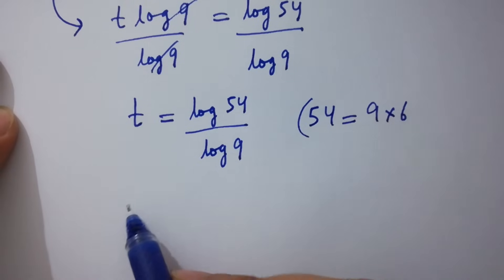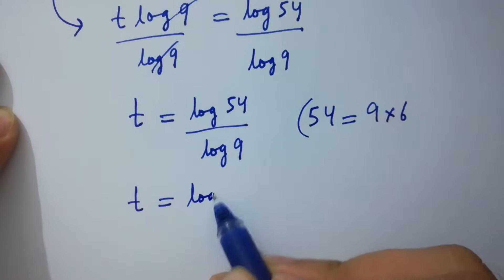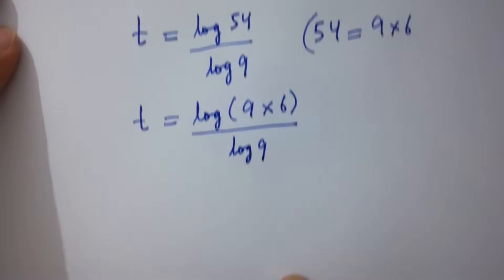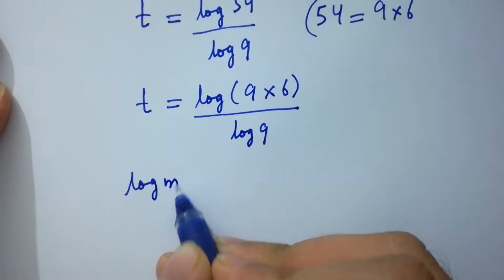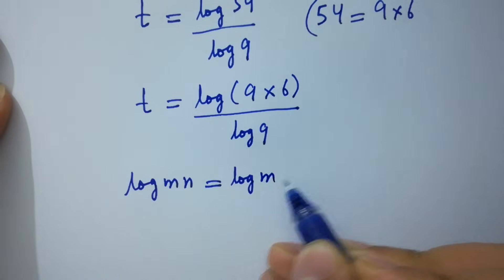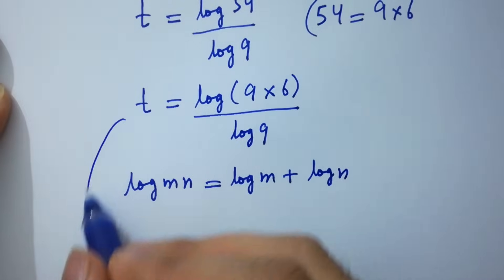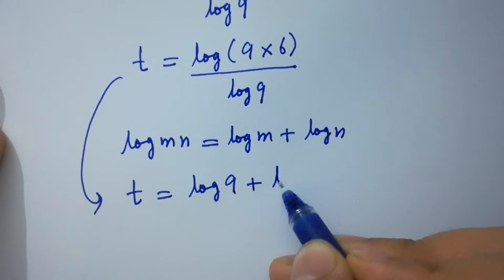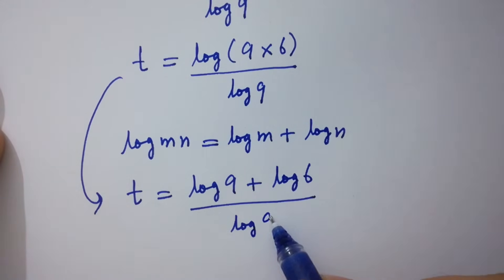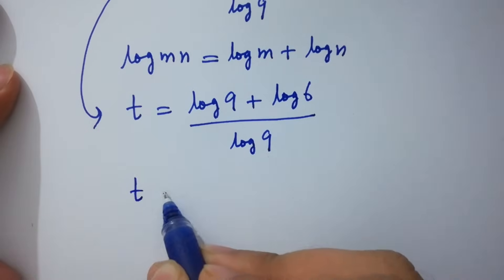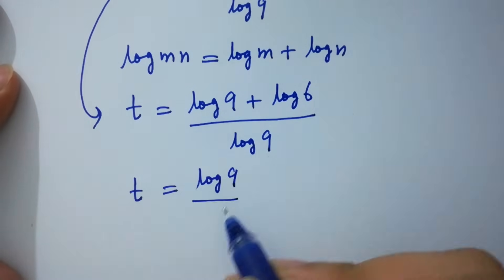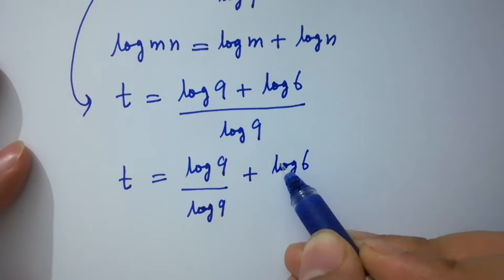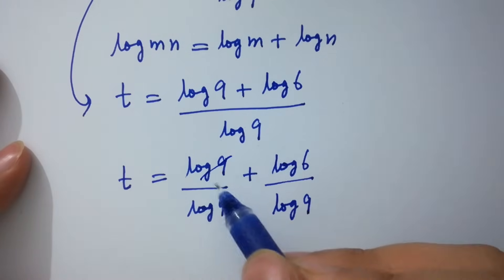t will be equal to log(9 times 6) over log 9. Using log mn equals log m plus log n, t equals log 9 plus log 6 over log 9. Separating into fractions: t equals log 9 over log 9 plus log 6 over log 9 — and log 9 and log 9 cancel.